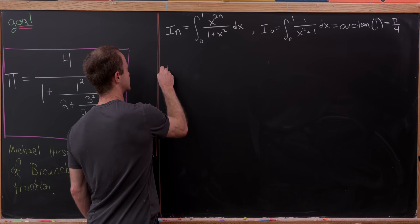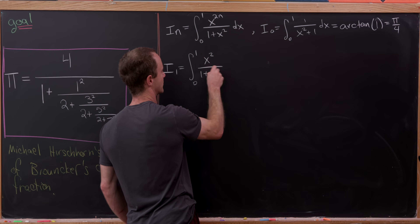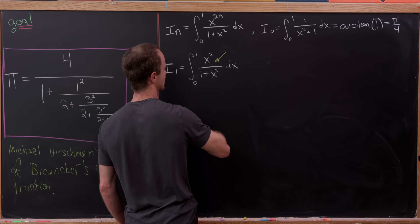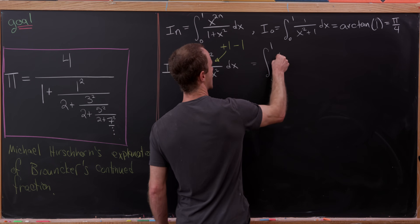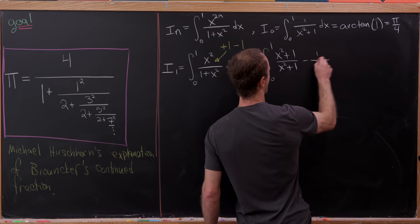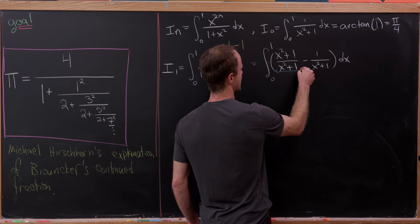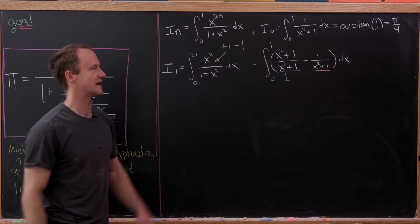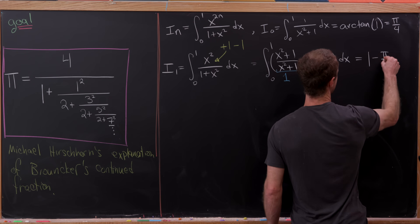Now let's look at I sub 1. That'll be the integral from 0 to 1 of x squared over 1 plus x squared dx. I'll add 0 by adding 1 and subtracting 1, leaving the integral from 0 to 1 of x squared plus 1 over x squared plus 1, minus 1 over x squared plus 1 dx. The first term cancels to 1 and the remaining term gives something related to I₀, so this is 1 minus pi over 4.